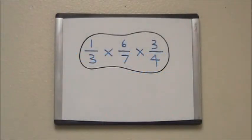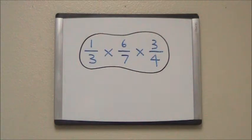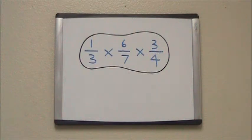Just like we use the technique of cross-cancelling with two fractions, we can also use it with three or more fractions. The problem on the board is one-third times six-sevenths times three-fourths.